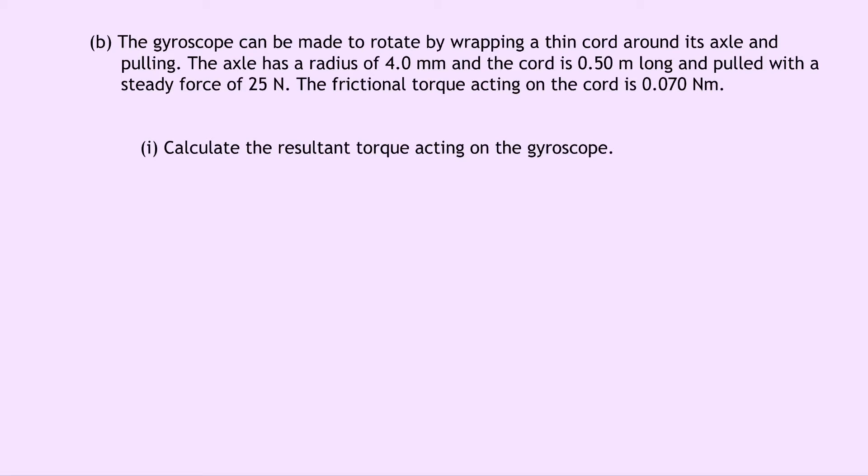Part 1 says calculate the resultant torque acting on the gyroscope. Well resultant torque is just another way of saying unbalanced torque. So we first need to find the torque T and then subtract the frictional torque from it to find the unbalanced torque.